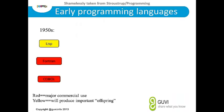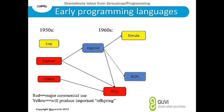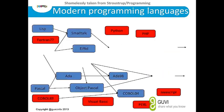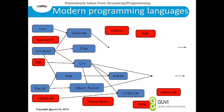Looking at the overall language history, the first three introduced were COBOL, Fortran, and Lisp. From these, Algol and Simula evolved, and from them came BCPL, and from BCPL came classic C. Keep this hierarchy in mind — classic C is the reason why C was introduced.